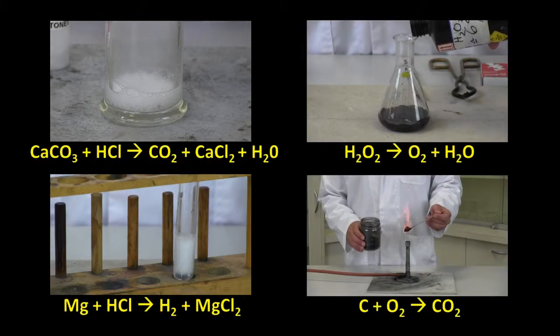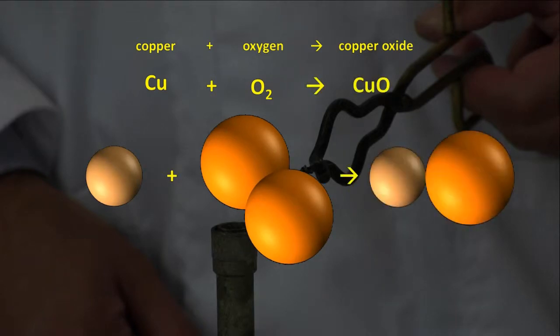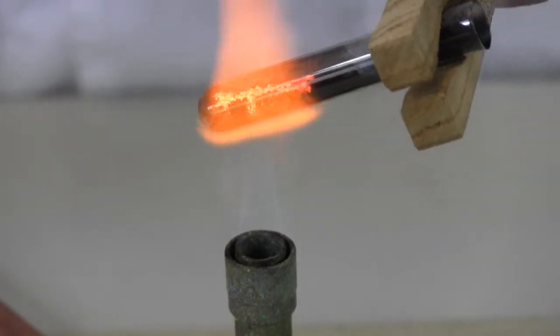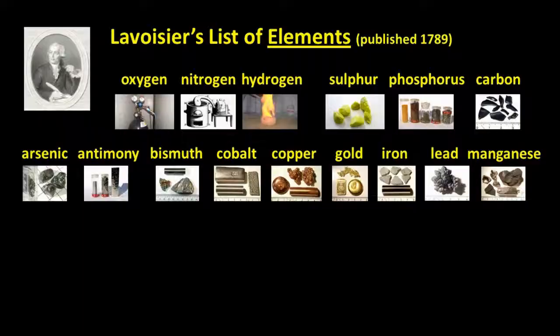We demonstrate how elements can join together to form compounds and how compounds can be broken back down into the individual elements that make them up. We take a look at the first fairly accurate list of elements ever published and examine the law of conservation of mass.